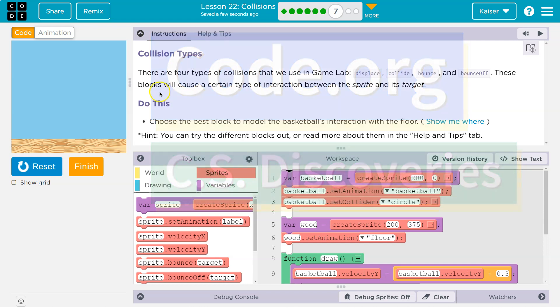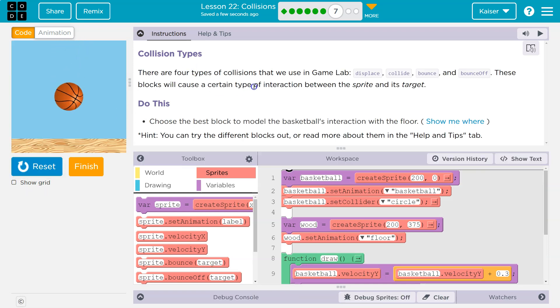This is Code.org. Let's see what we're doing here—collision types. There are four types of collisions we use in Game Lab: displace, collide, bounce, and bounce off. These blocks will cause a certain type of interaction between the sprite and the target.